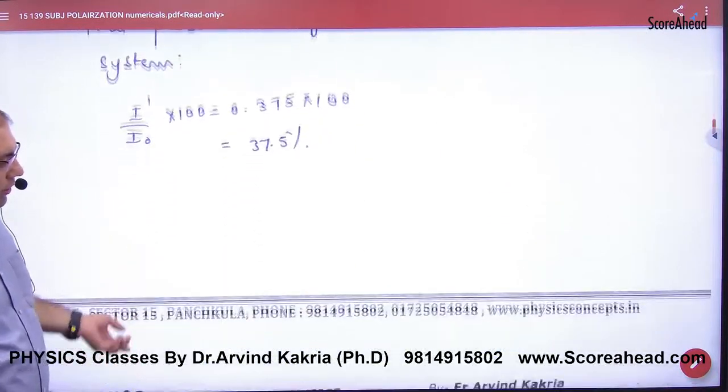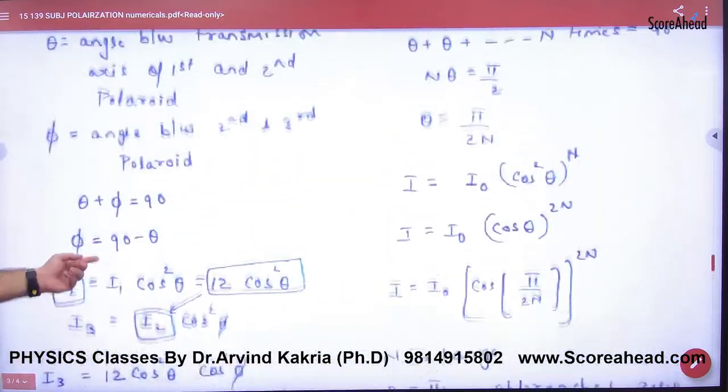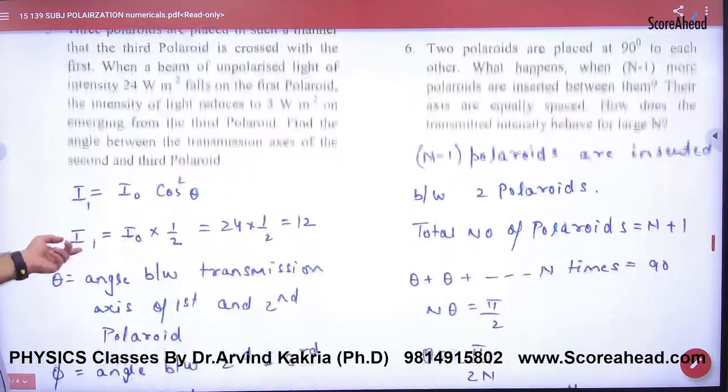So in Polarization, we have done the last numerical. It was numerical number 5. You have to do 6.